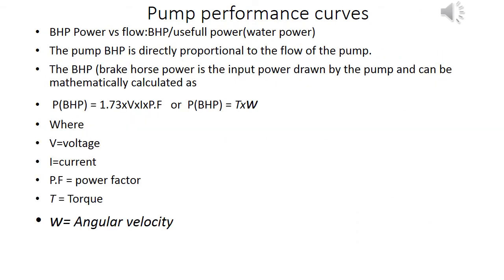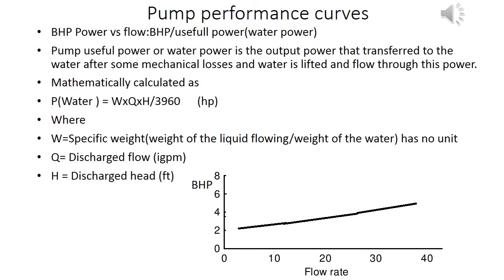The pump BHP is directly proportional to the flow of the pump. BHP, or brake horsepower, is the input power drawn by the pump and can be mathematically calculated by the formula where V equals voltage, I equals current, PF equals power factor, T equals torque, and omega equals angular velocity.